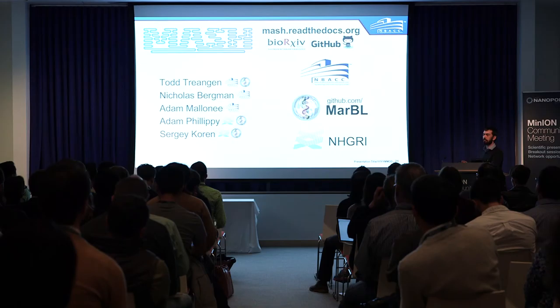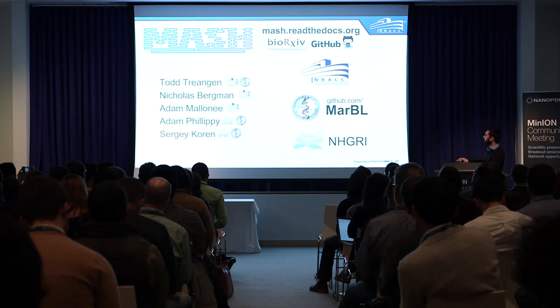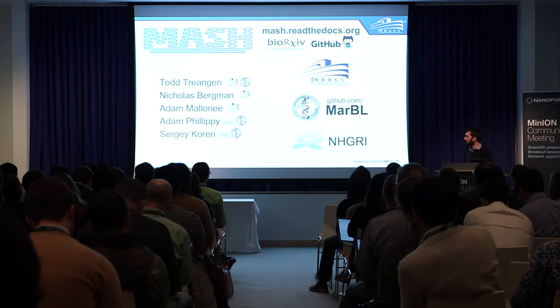The software implementing this minhash algorithm, as I was talking about it, we're calling MASH. It's available now on GitHub. There's a pre-print of this work on BioRxiv, documentation at Read the Docs. These are all people that contributed to it. We're collaborating with people at NHGRI, and we have this consortium for our collaboration called MARBL — Maryland Bioinformatics Lab — on GitHub. With that, I'd like to thank you for your attention and I'll take any questions.